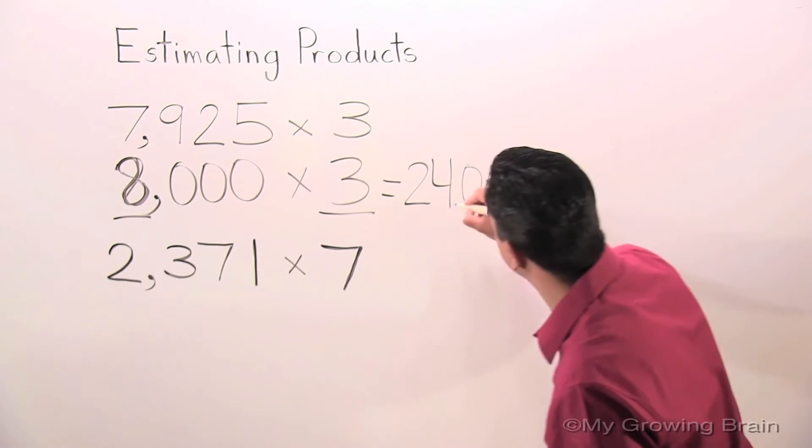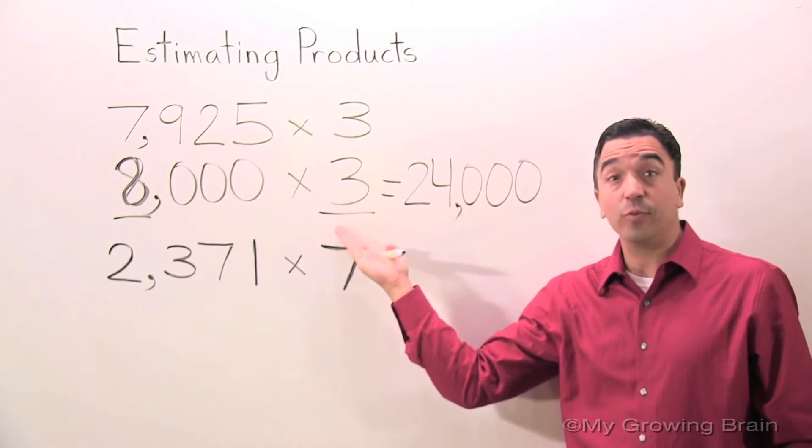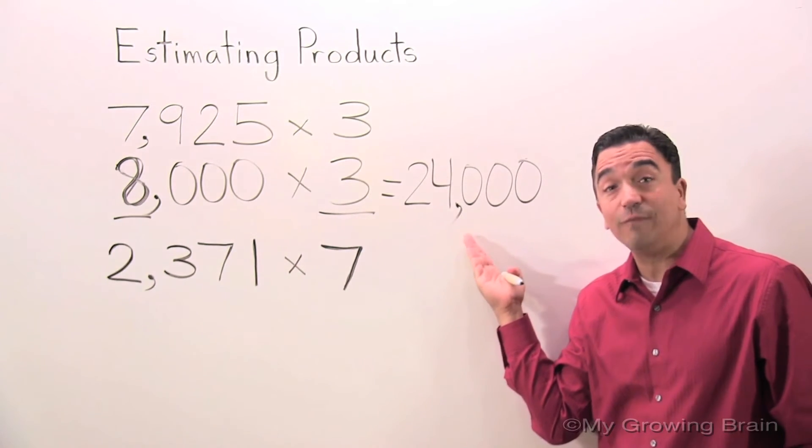Don't forget the comma. Eight thousand times three is equal to 24,000.